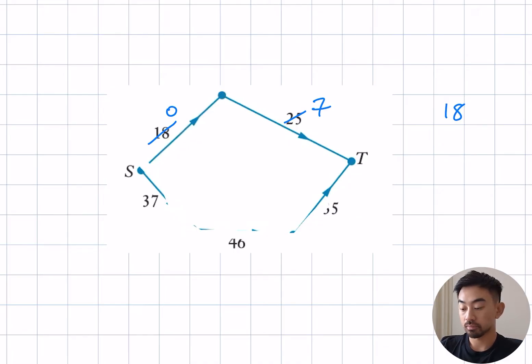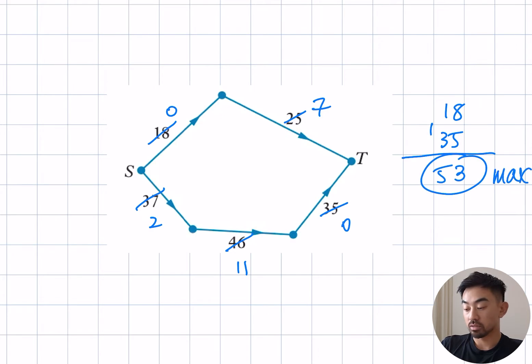So clearly I can't go up here anymore because that's 0. So I need to go down here. What's the smallest out of these three numbers? Well it's 35 right? So I write 35 there and subtract from each of the edges. 46 minus 35 is 11, 35 minus 35 is 0 and now I'm done. So add those two up, 53 is my max flow.